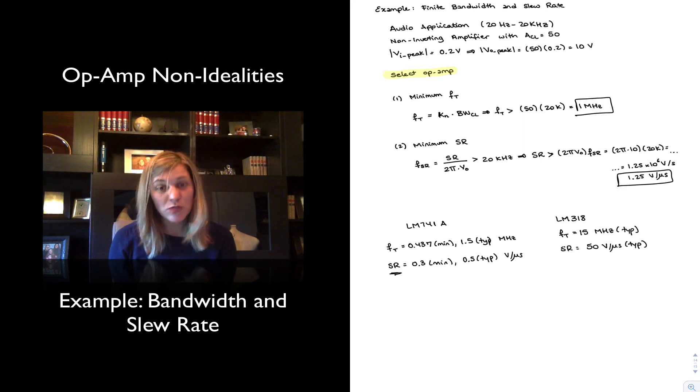In this case, again, the minimum specs for the 741A will not meet the minimums needed for transition frequency and slew rate. The LM318 meets both, and we still have a lot of room in there, so if we were able to find something in between that still meets the specs, perhaps cheaper than the LM318, we probably will go with that choice, but if we had to choose between those two, obviously the 318 is the one that we will choose.